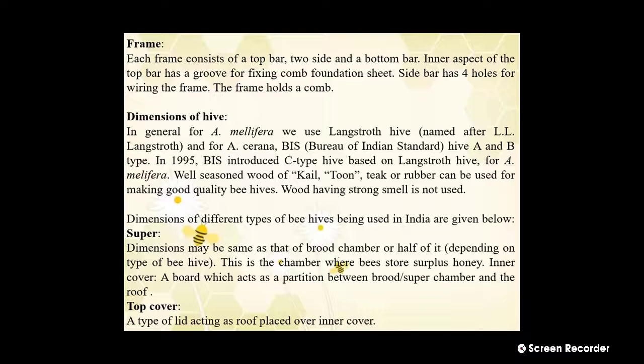Regarding the dimensions of the hive: in general, for Apis mellifera (European honey bee) we use the Langstroth hive, named after L.L. Langstroth, and for Apis cerana we use the Bureau of Indian Standards hive, A and B type. In 1995, the Bureau of Indian Standards introduced the C type hive based on the Langstroth hive for Apis mellifera. Well-seasoned wood of kale, toon, teak, or rubber can be used for making good quality bee hives. Wood having a strong smell is not used. Dimensions of different types of bee hives used in India are given below.